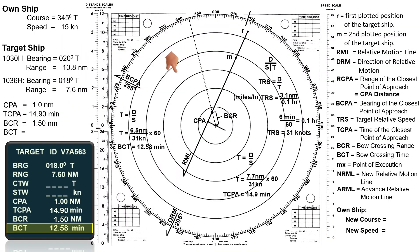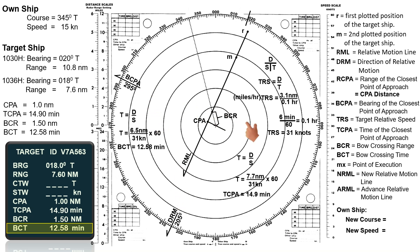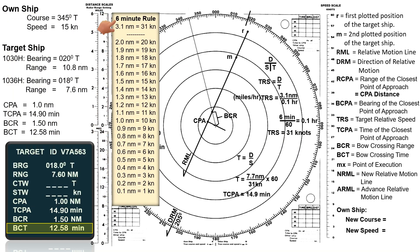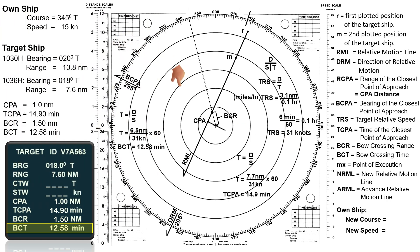This video is part two of the radar plotting tutorial. In part one, we covered how to determine the closest point of approach, time of the closest point of approach, bow crossing range, bow crossing time, direction of relative motion, bearing of the closest point of approach, relative speed, and the six-minute rule. We recommend watching part one before proceeding; the link is available in the description below.